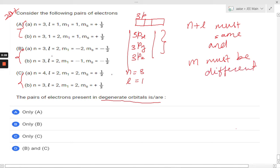So apply this here. So what we can see: n equals to 3, l equals to 1, and here n equals to 3 but l equals to 2. So this is not a degenerate orbital.